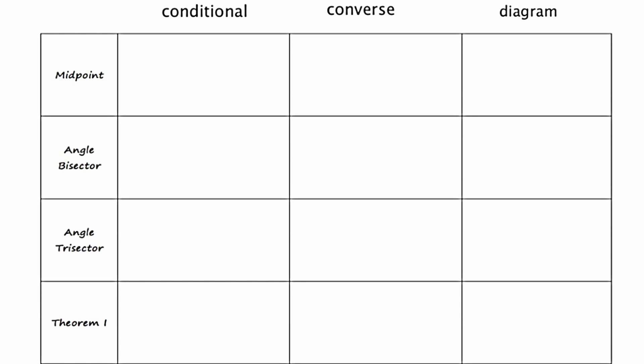We're on the second slide now. Just a reminder before we begin: let's review what it means for something to be a conditional statement, and that is to be in the form of if P then Q. P stands for the hypothesis and Q stands for the conclusion. And if we interchange the P and the Q, then we formulate what's called the converse: if Q then P.